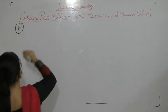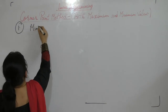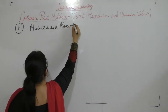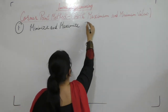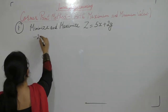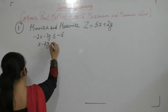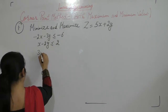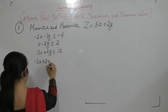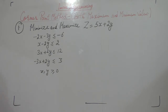Solve the following LPP: minimize and maximize z equals 5x plus 2y, subject to: minus 2x minus 3y less than or equal to minus 6, x minus 2y less than or equal to 2, 3x plus 2y less than or equal to 12, minus 3x plus 2y less than or equal to 3, and x, y greater than or equal to 0.